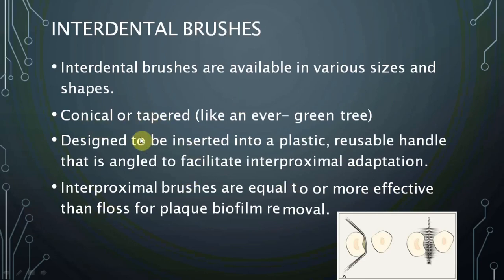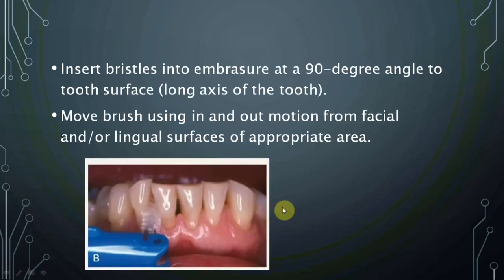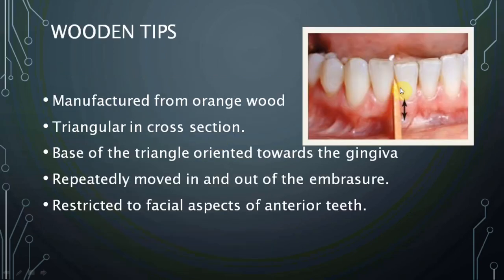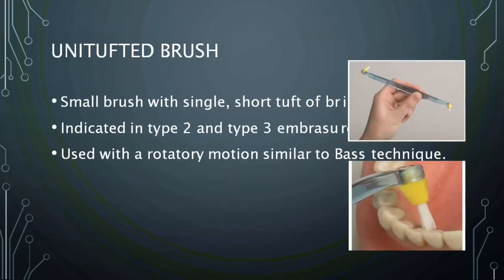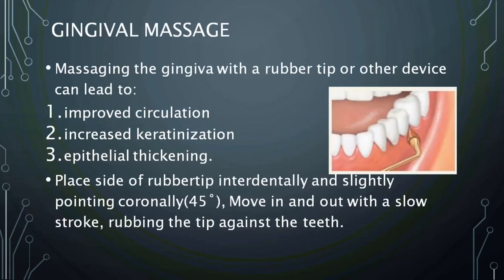Interdental brushes come in various sizes and shapes — conical or tapered — and are designed to be inserted into a plastic reusable handle. They are inserted at 90 degrees with in-and-out motions. Wooden tips are triangular in cross section with the base of the triangle oriented towards the gingiva and the small sharp edge towards the coronal side. Unit interdental brushes can be used for Type 2 and Type 3 embrasures, and gingival massage improves circulation, keratinization, and epithelial thickening.